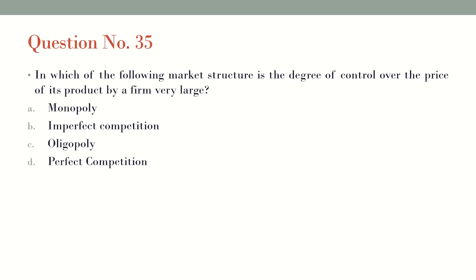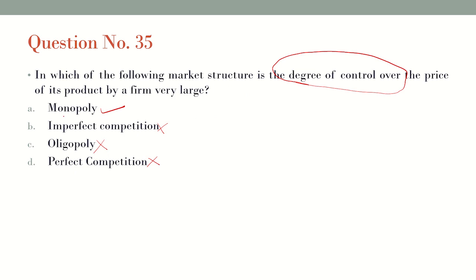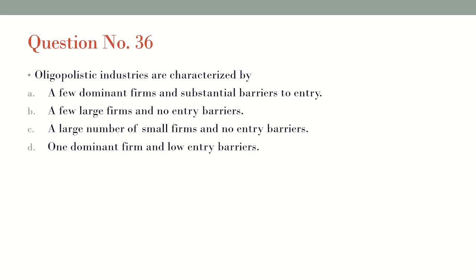Question number 35: In which of the following market structures is the degree of control over the price of its product by a firm very large? We are talking about the control a producer can exercise over pricing strategy. In imperfect competition there are many forms, oligopoly has sticky pricing, and in perfect competition there is absolutely no control over price. The answer is the monopoly market, where the monopolist can even discriminate prices for different market segments.